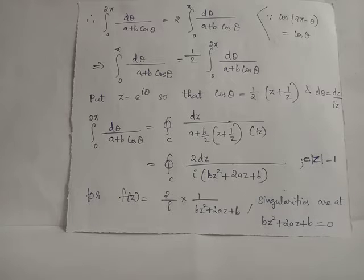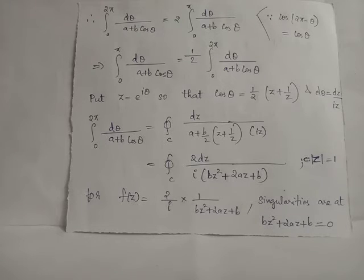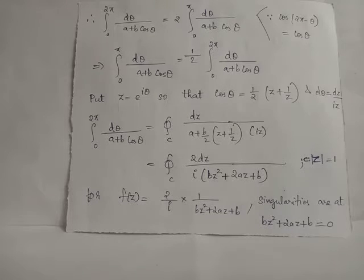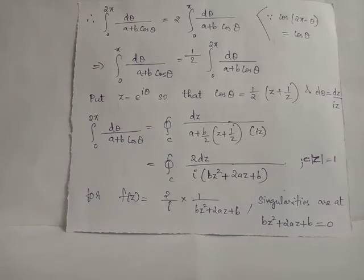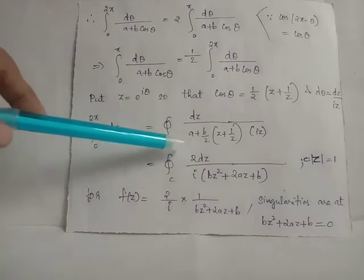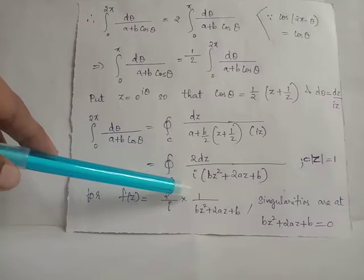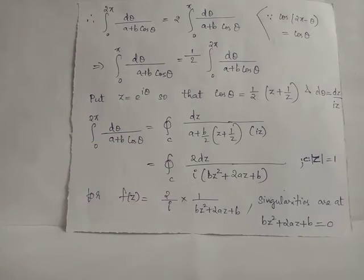Thus we can apply the substitution z = e^{iθ}, so that we can make use of the relations dθ = dz/(iz) and cosθ = (1/2)(z + 1/z). The integral is rewritten in this form; taking the LCM in the denominator gives a simplified form.